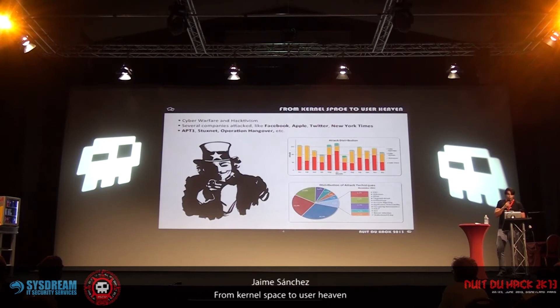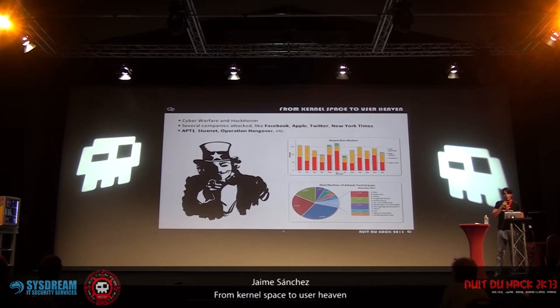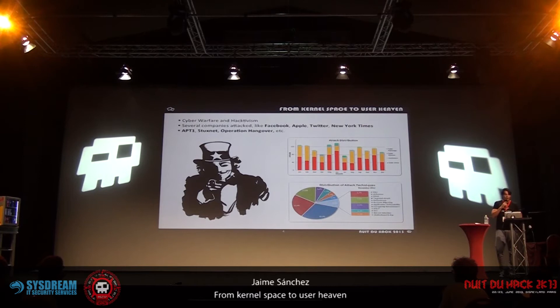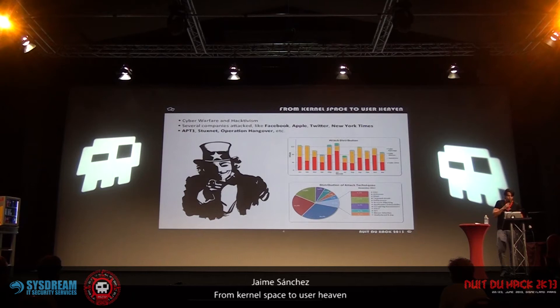There is a lot of cyber warfare and hacktivism — companies like Facebook, Twitter, Apple, or the New York Times have been hacked recently. There have been a lot of advanced threats like APT1 and Stuxnet. Attackers intending to hack into computers first look for vulnerabilities in protocols, operating systems, applications, or even the organization's employees. To use that kind of exploit, the attacker first has to retrieve the maximum amount of information from the network architecture or from the operating systems they want to attack on the remote network.